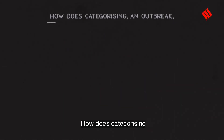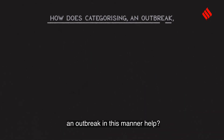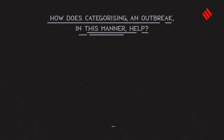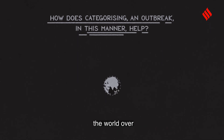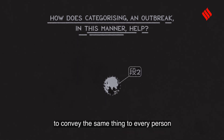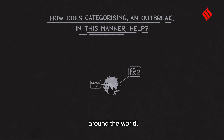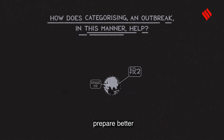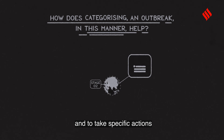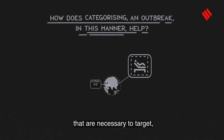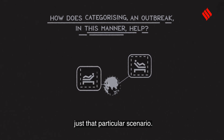How does categorizing an outbreak in this manner help? The stages of a pandemic are uniform the world over, conveying the same thing to every person around the world, thus helping countries better prepare and take specific actions necessary to target just that particular scenario.